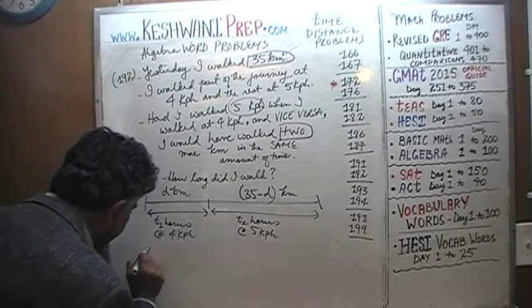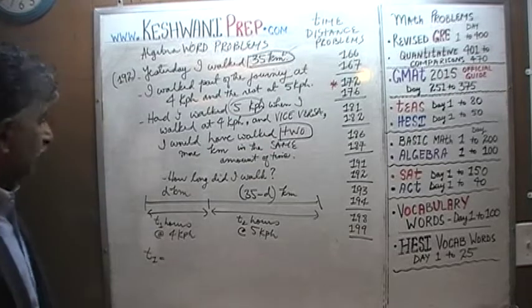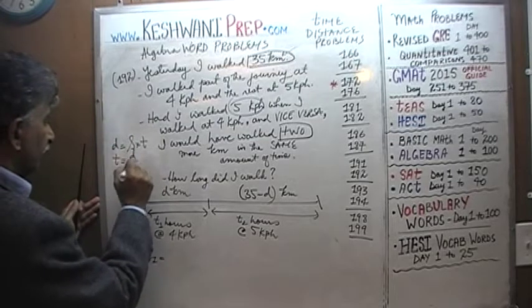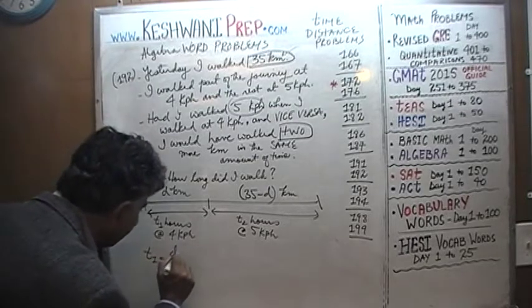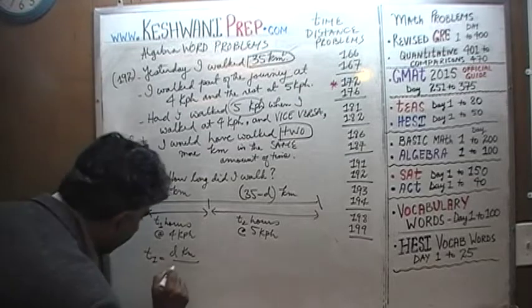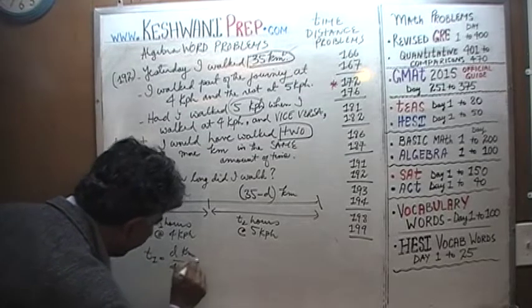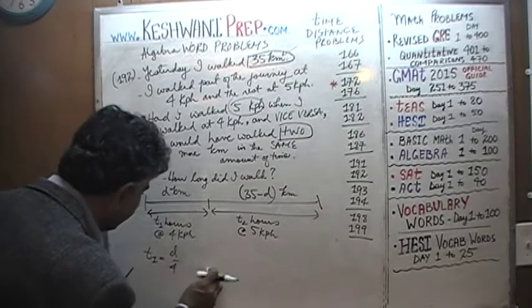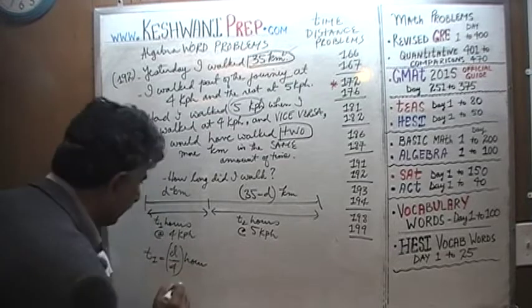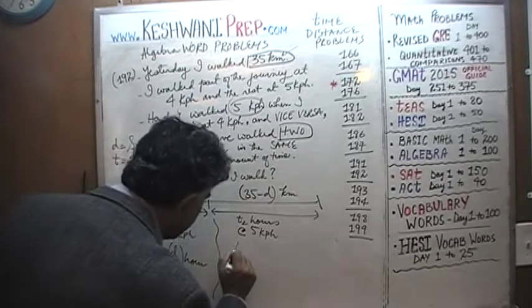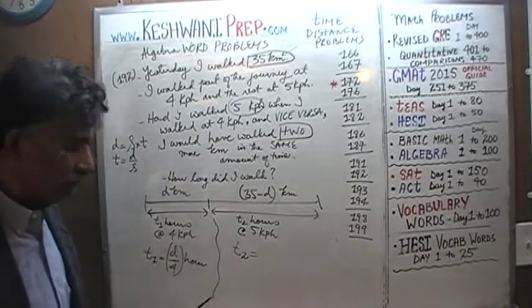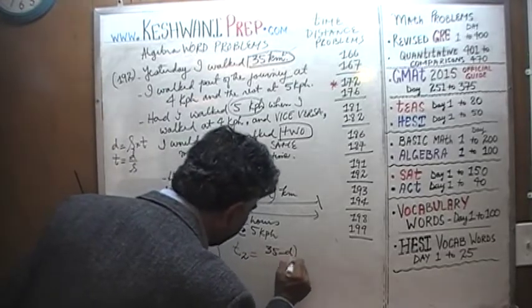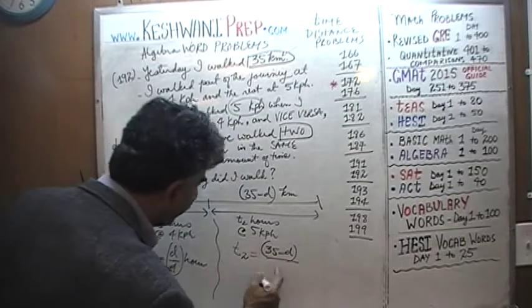From the formula d = s × t, we get t = d/s. So t1 equals d over 4 hours. Similarly, t2 for the second leg equals (35 − d) over 5 hours, since the distance is 35 minus d and the speed is 5 km/h.